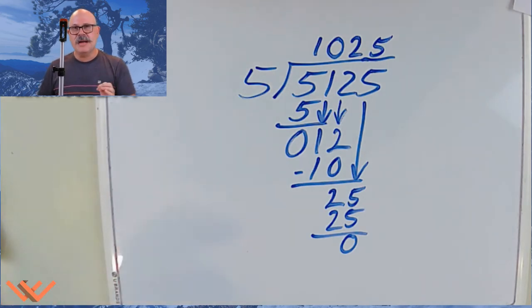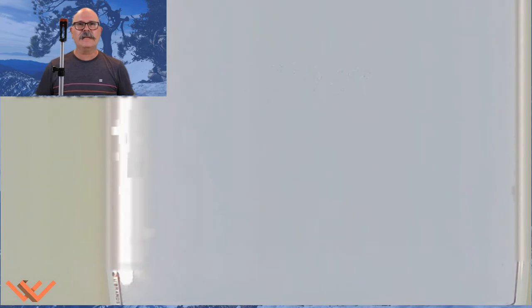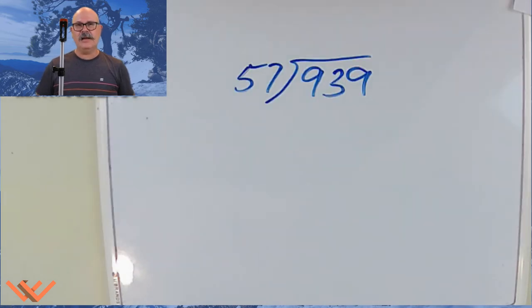I want you to work on this. And remember, it's the same principles that we're going to be working with when we have a double digit divisor. Let's move on to that. Okay, friends. We're looking at this problem. It's 939 divided by 57.